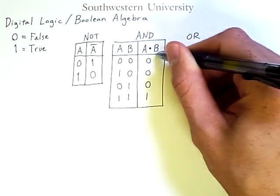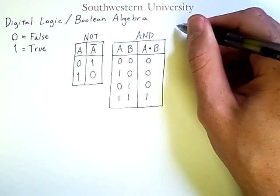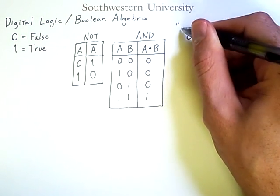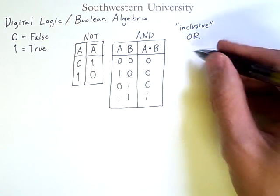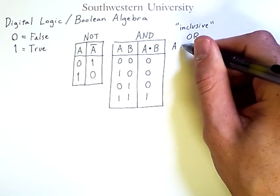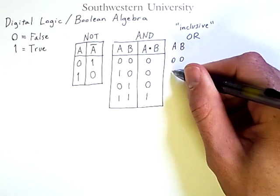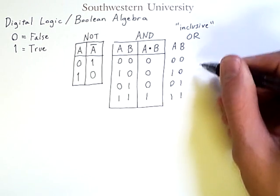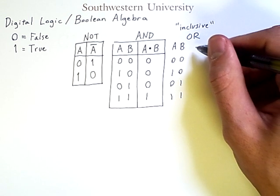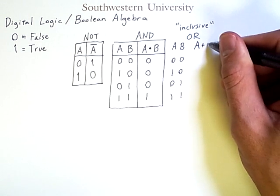The third operation, which you are certainly familiar with, is OR. And this will be the inclusive version of OR. Let's start by writing out possible values of the variables.